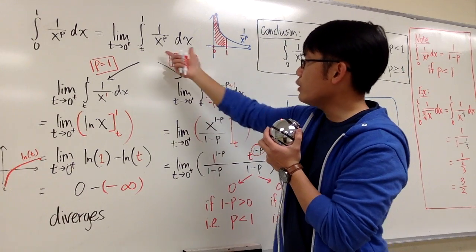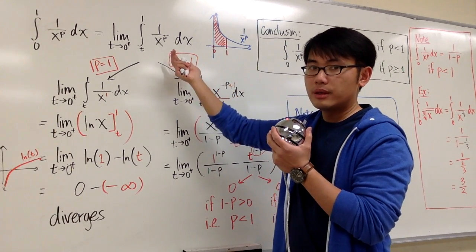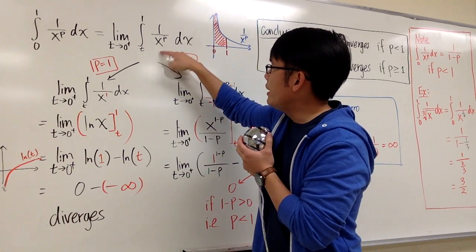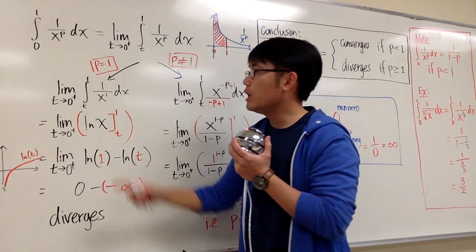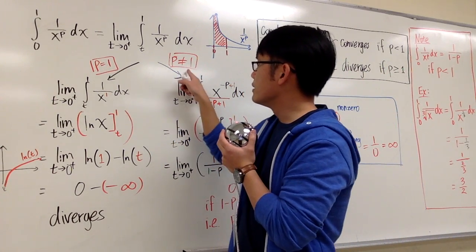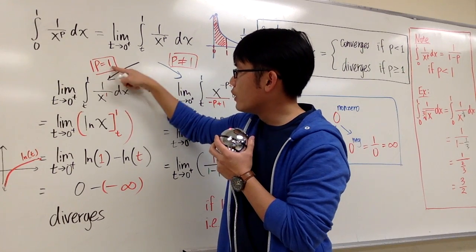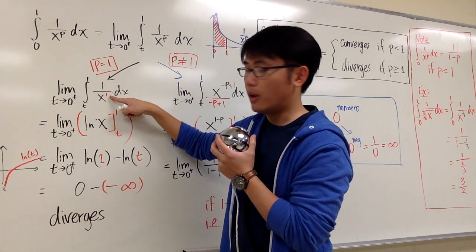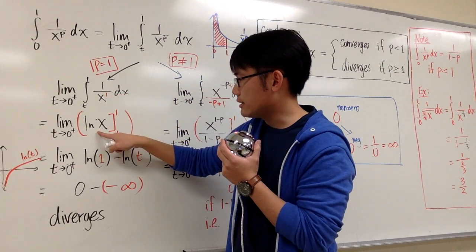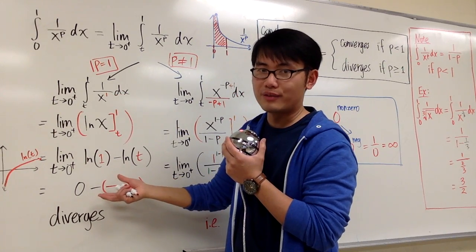To handle this, what we do is just integrate it. But to integrate 1 over x to the p power, we have to consider cases: p is equal to 1 versus p is not equal to 1. Because when we have p is equal to 1, we have 1 over x to the first power, and the integral of that is ln(x). Let's continue with this part first.